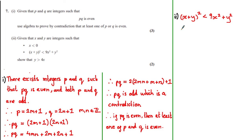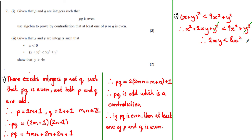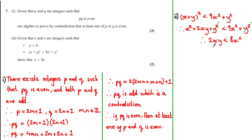Starting with the second statement, let's expand the left-hand side of the inequality. We get x² + 2xy + y² < 9x² + y². The y² terms cancel on both sides. Subtracting x² from both sides gives 2xy < 8x². This is the point where many students slip up, because the natural next step is to divide both sides by 2x and get y < 4x. However, since x is less than 0, we would be dividing by a negative number.